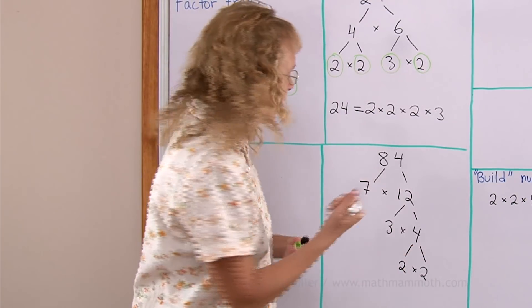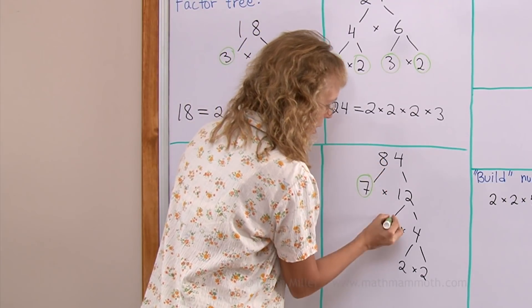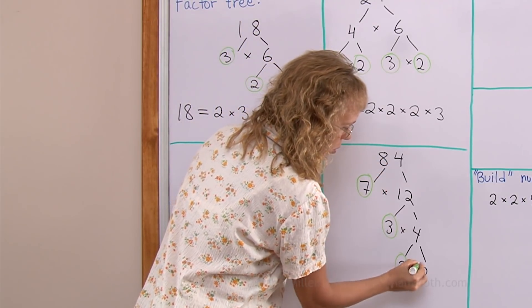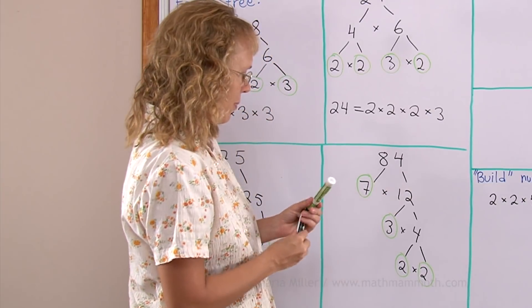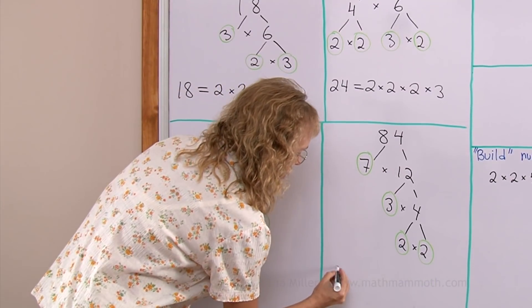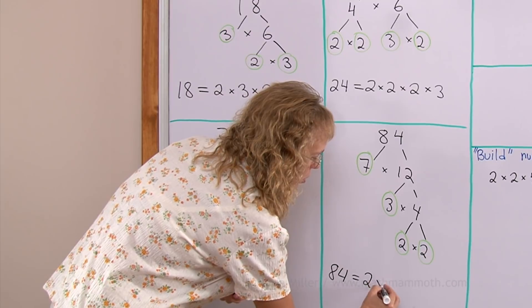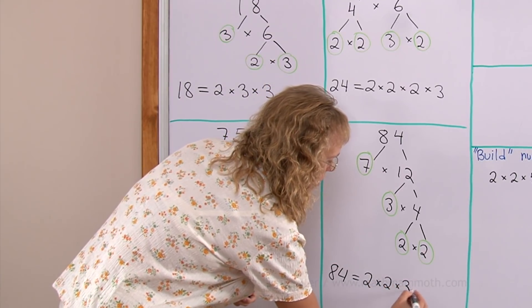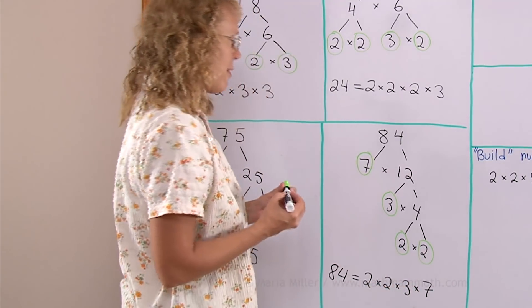It's time to pick the leaves again: the 7, 3, 2, and 2. But when I'm writing it, I will get 84 equals starting with 2: 2 times 2, then times 3, and lastly times 7.